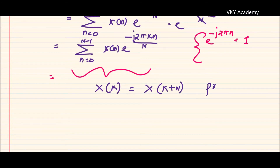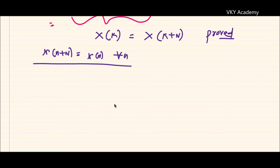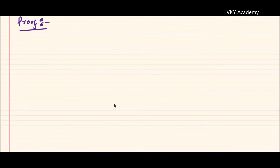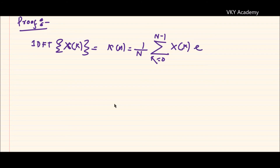Now let us prove x(n + N) equals x(n) for all values of n. For that I need to write down the IDFT formula. We know that IDFT of X(K) is always equal to x(n), which is one upon capital N, summation from k equals 0 to N minus 1 of capital X(K) times e to the power plus j two pi k n upon capital N.